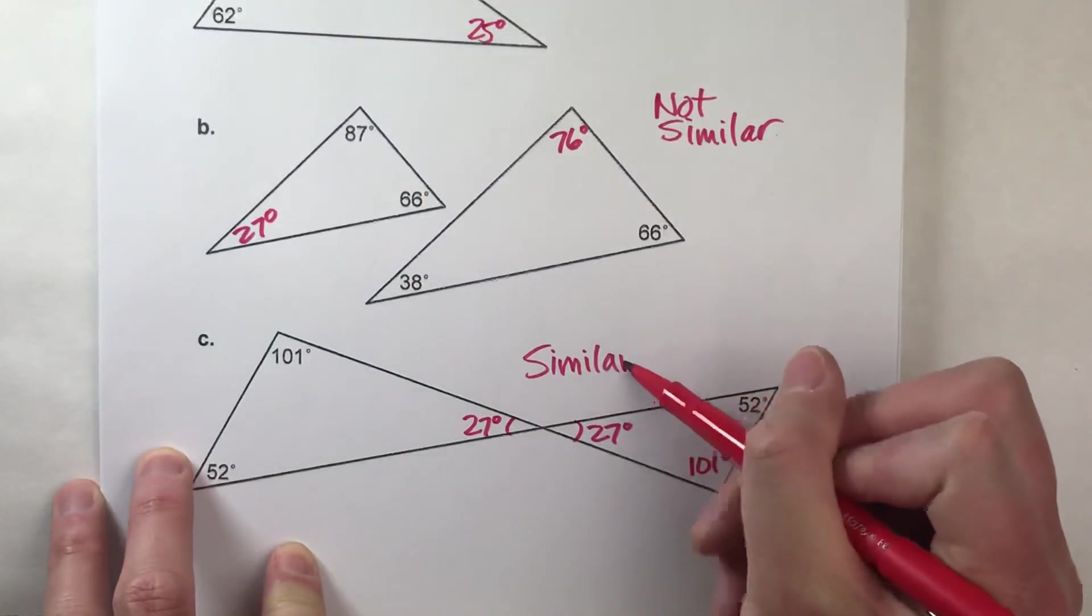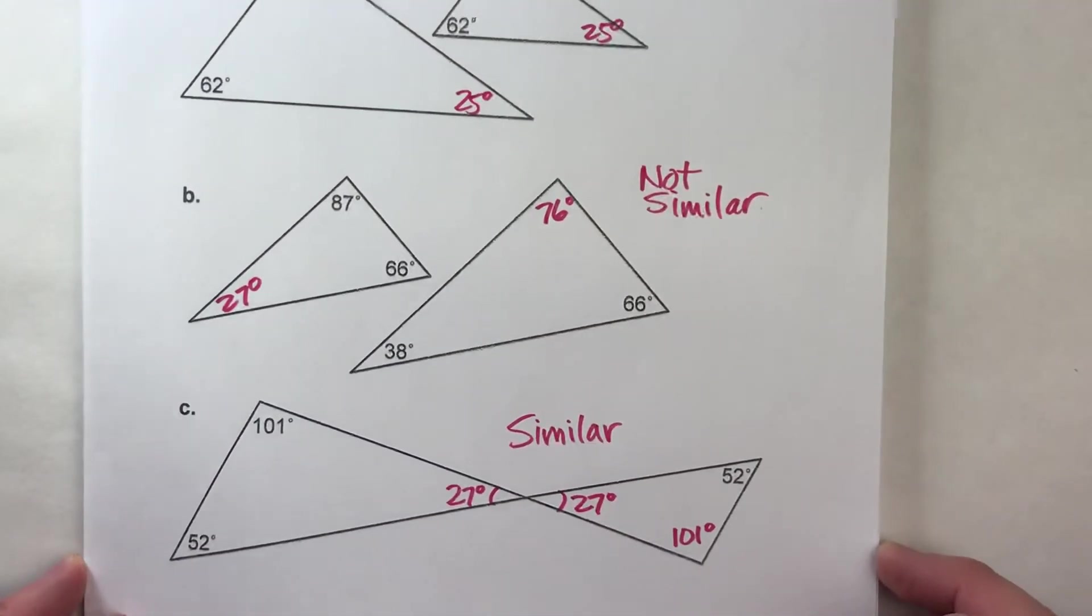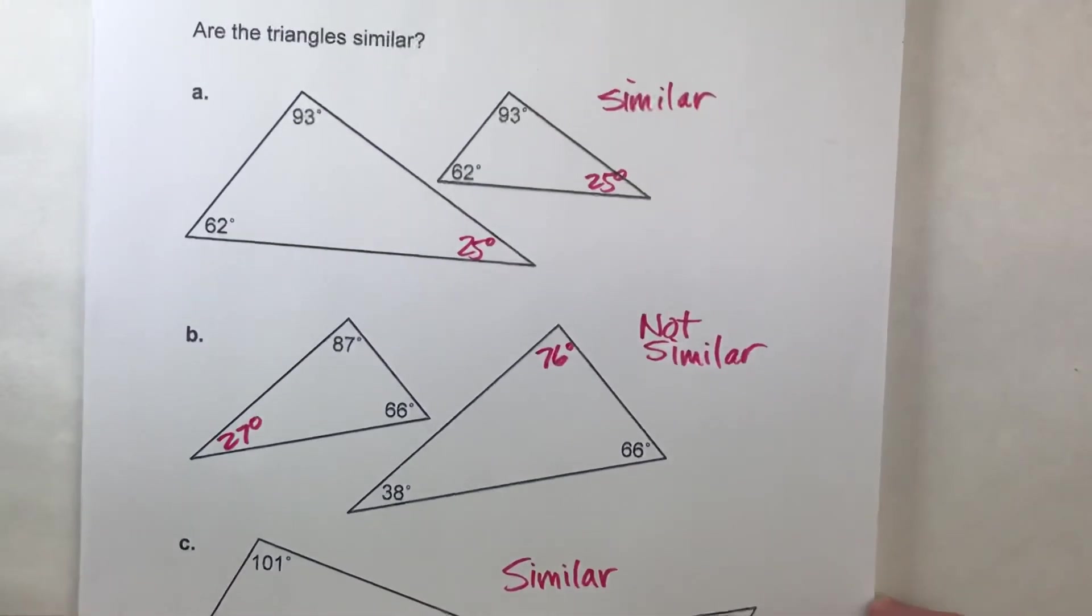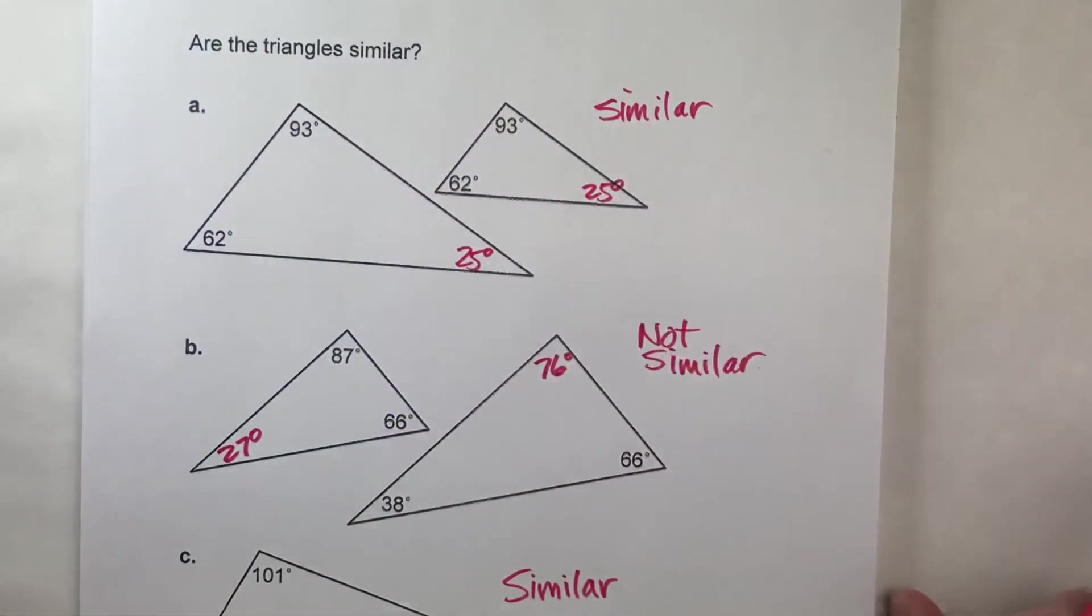So checking to see if two triangles are similar, it's just as easy as that. Check to see if the three angles match up. And if you're lucky, sometimes you'll be given two angles that match up right off the bat, and then you'll know right away they're similar. So hopefully this video helped you. If it did, please hit that like button. Also subscribe because it really helps us out. But with that being said, good luck on your math and I will see you next time.